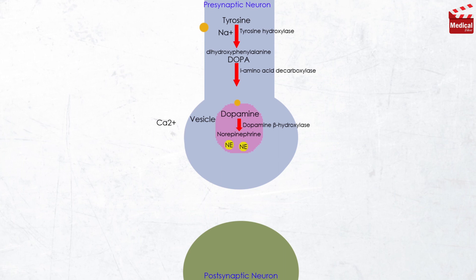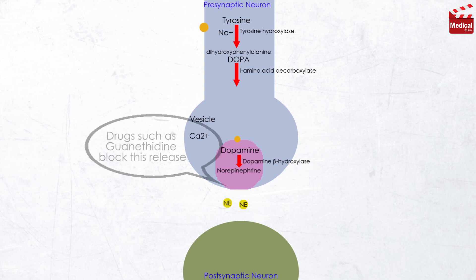As we discussed before in synaptic transmission video, when an action potential arrives at the nerve ending, voltage-sensitive calcium channels on the presynaptic membrane open, causing an increase in the concentration of intracellular calcium. Elevated calcium levels promote the fusion of synaptic vesicles with the cell membrane and the release of their contents into the synaptic space. Drugs such as guanethidine block this release.